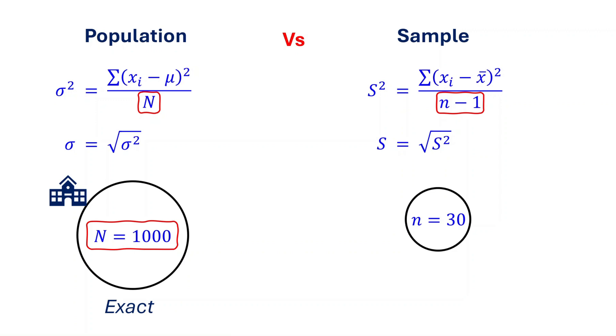There is no guesswork involved when working with a population. However, when we work with a sample, we only have data for a smaller group taken from a larger population. This means we are estimating the population variance and standard deviation from limited data. The sample variance and standard deviation are just estimates of the true population variance and standard deviation.